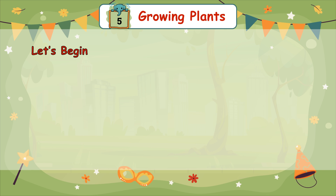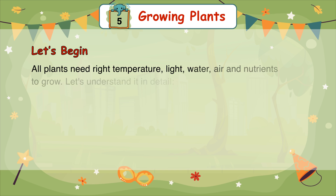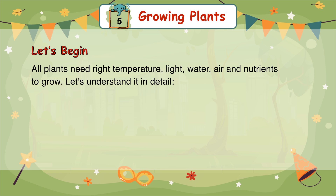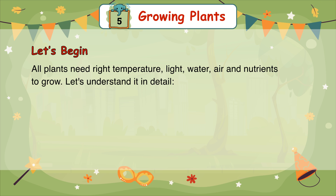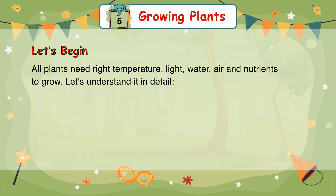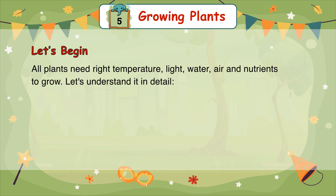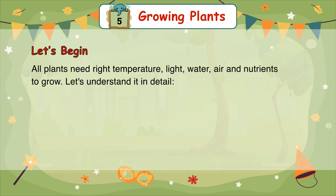Let's begin. All plants need the right temperature, light, water, air, and nutrients to grow. Let's understand it in detail.